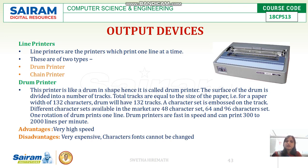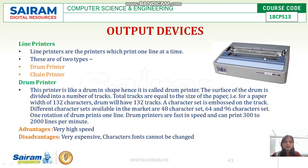Next are line printers, which print one line at a time. There are two types: drum printers and chain printers. A drum printer looks like a drum.